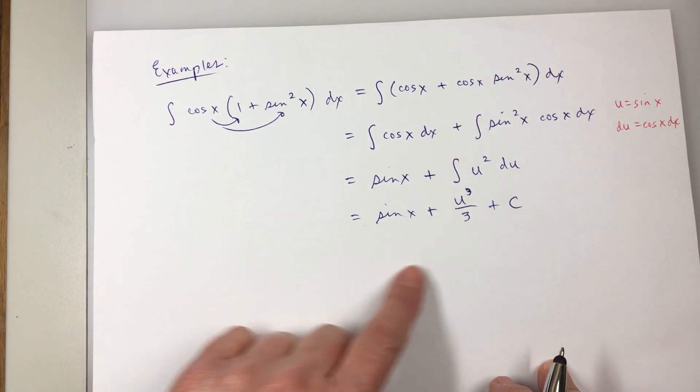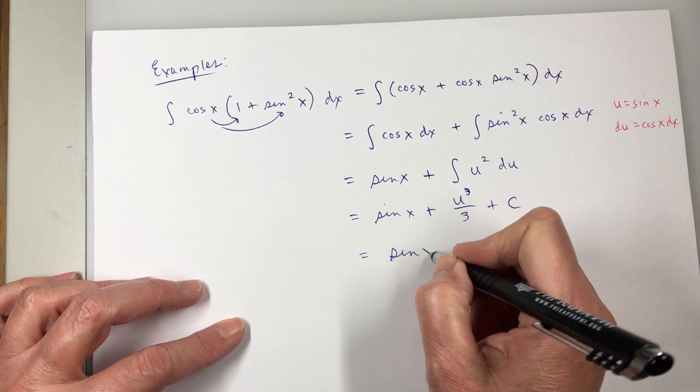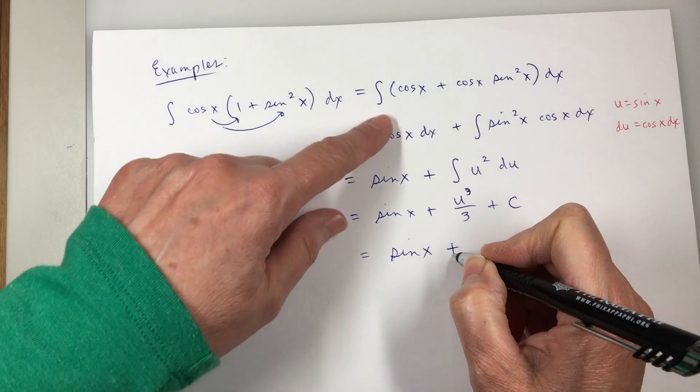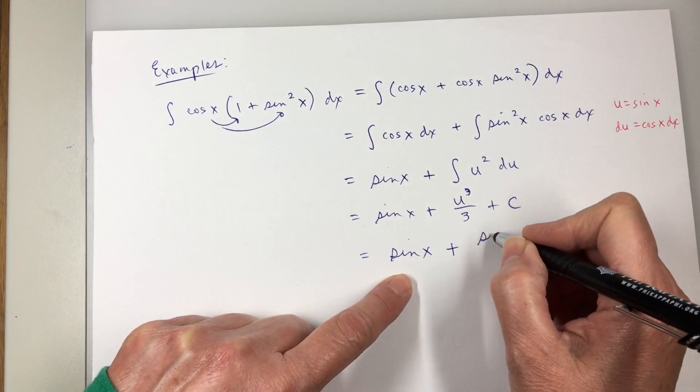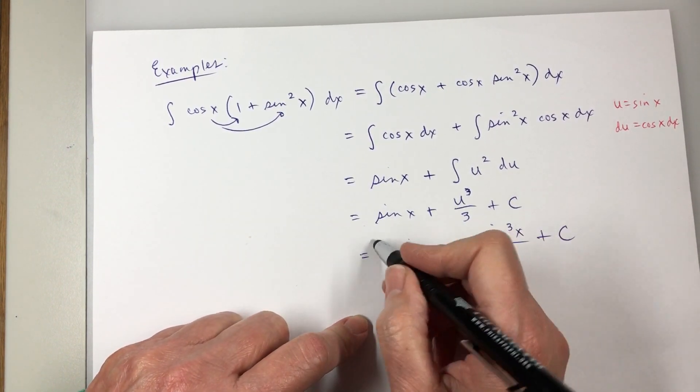And then I'll put sine x back in. So, sine x from that first integral, plus sine cubed x over three plus c.